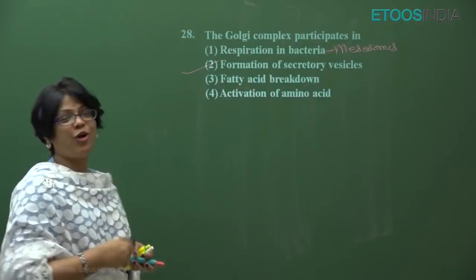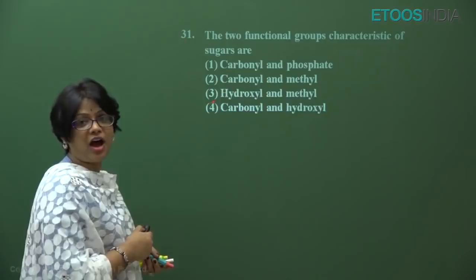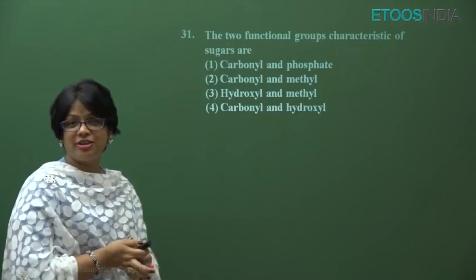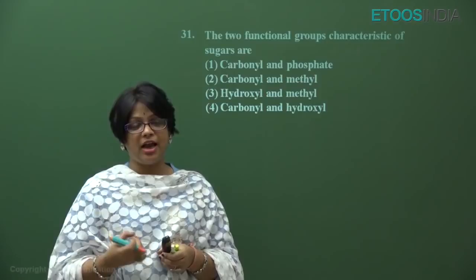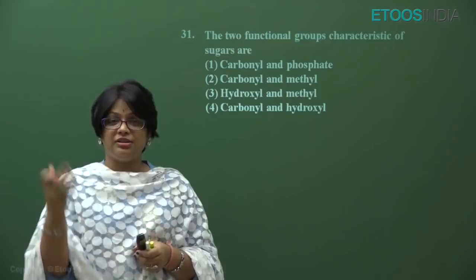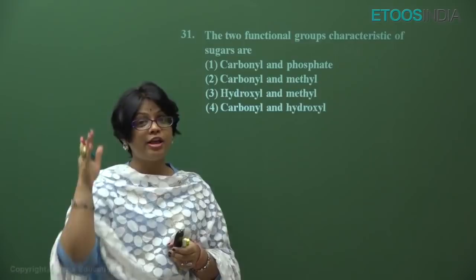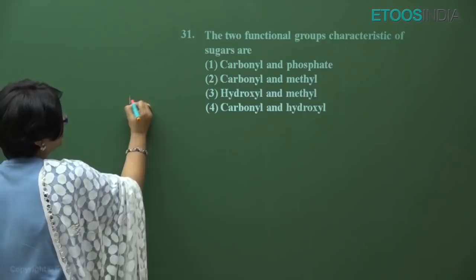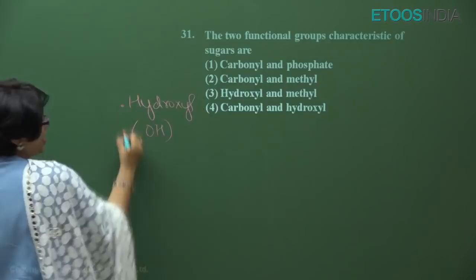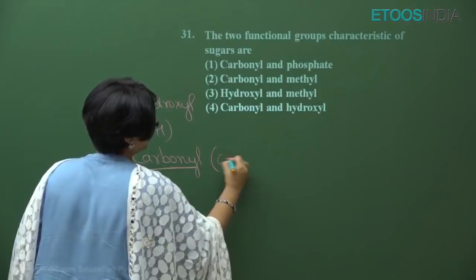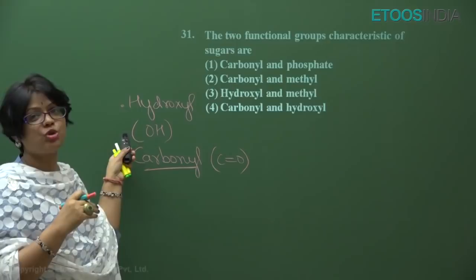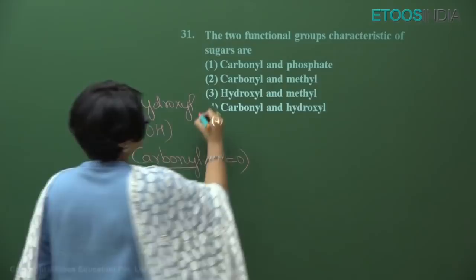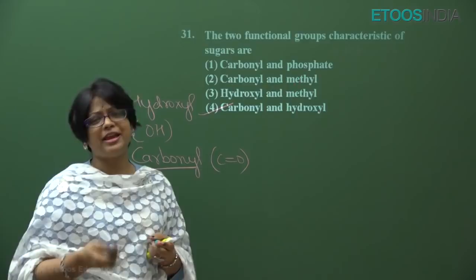Question number 31 is a slightly tricky question: the two functional groups characteristic of sugars. If you remember, simple monosaccharides are aldehyde or ketone derivatives — there is a hydrocarbon chain with OH groups attached to carbons, and on one carbon there is either an aldehyde or ketone group. So sugars have two groups: the hydroxyl group (–OH) and the carbonyl group (C=O). They do not have any methyl or phosphate group, so the answer is four.